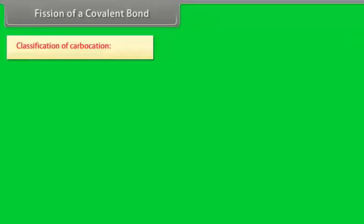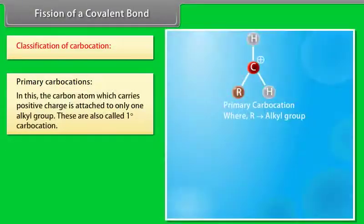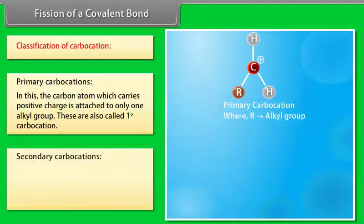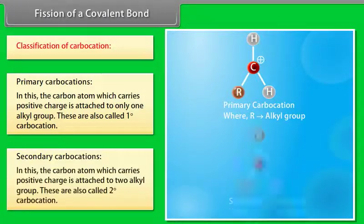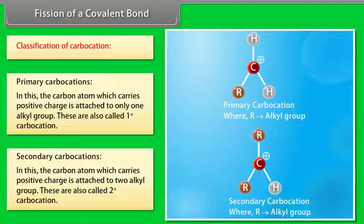Classification of carbocations: In primary carbocations, the carbon atom which carries positive charge is attached to only one alkyl group — also called one degree carbocation. In secondary carbocations, the carbon atom carrying positive charge is attached to two alkyl groups — also called two degree carbocation.